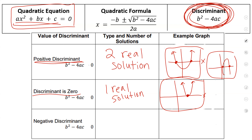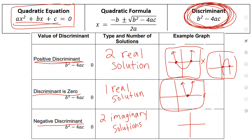Finally, if you have a negative discriminant — if you plug it into the formula and get a negative answer — that means you'll have two imaginary solutions. Which means when you graph it, it won't touch the x-axis at all. You don't have any real solutions, you don't have any real x-intercepts. That's what the discriminant will tell you about your graph.